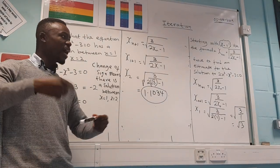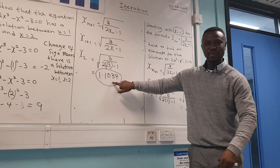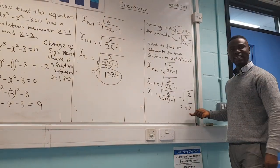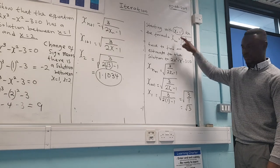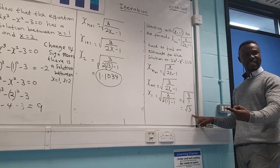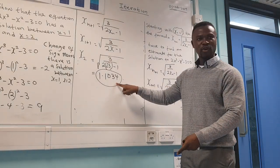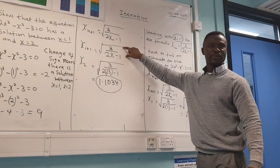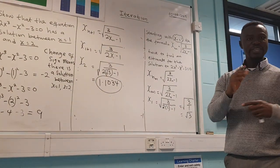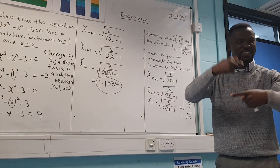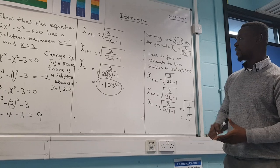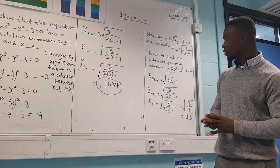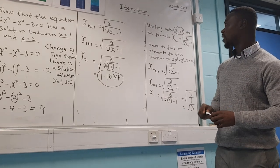If the question asked for three iterations, I would use this result back into the formula again to get a new answer. Iteration is very easy — it just means keep repeating but use the new answers you get each time. I'll stop here with these three questions. I hope it helps you solve any iteration question you get, and if you still struggle, don't forget to comment and I'll get back to you.